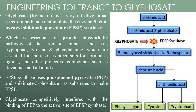These aromatic amino acids are essential as precursors for hormones, lignans, and other protective compounds such as flavonoids and alkaloids. EPSPS synthase uses phosphoenolpyruvate (PEP) and shikimate-3-phosphate as substrates. Glyphosate competitively interferes with the binding of PEP to the active site of EPSPS synthase.